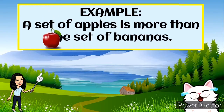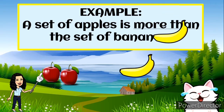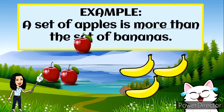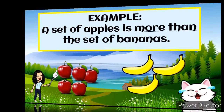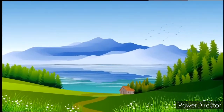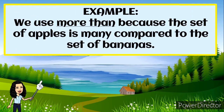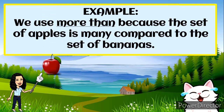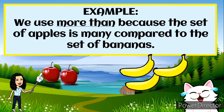A set of apples is more than the set of bananas. In set A we have five apples and in set B we have three bananas. We use more than because the set of apples is many compared to the set of bananas.